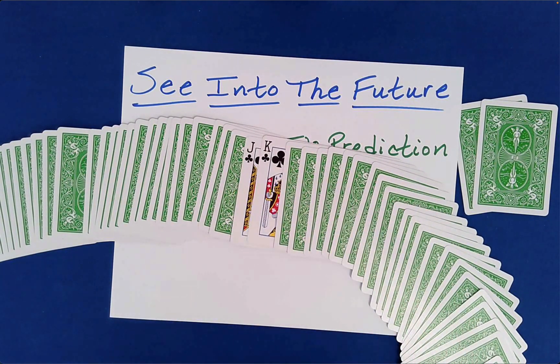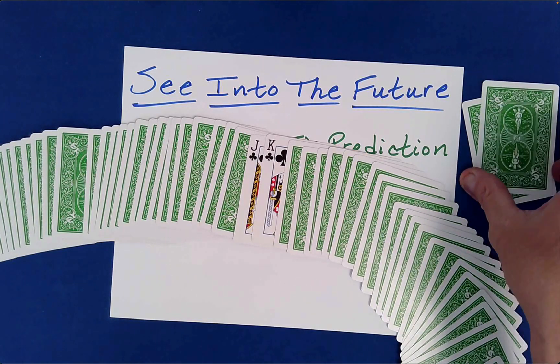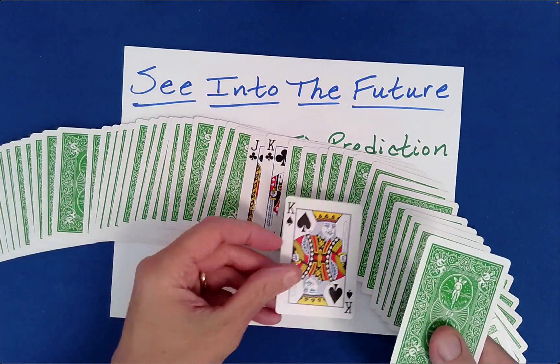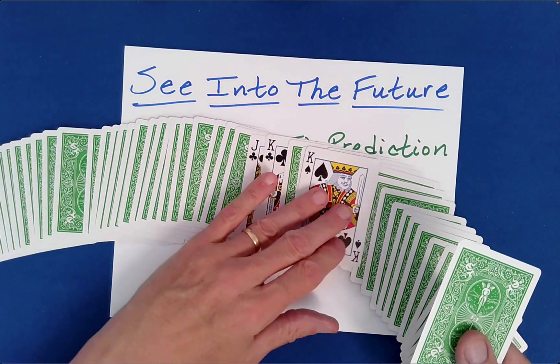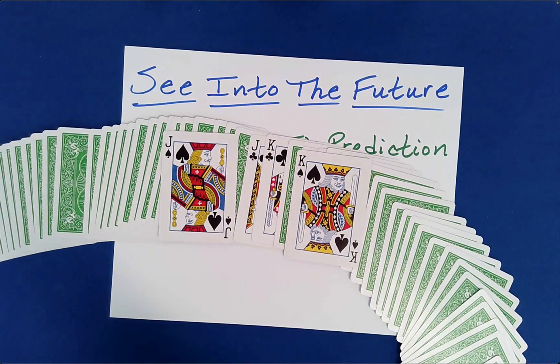I thought we had mixed them face up, face down. I mean, you saw me, right? What is going on here? You saw me shuffle those face up and face down. How did these two get? Wait a second. We had two prediction cards, didn't we? At the beginning?